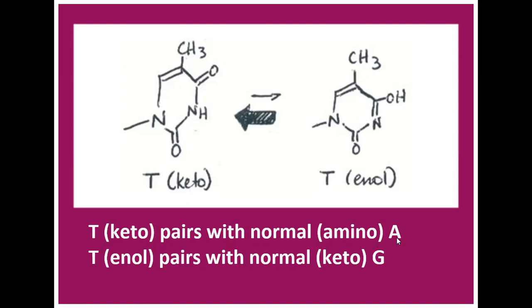And a small fraction of thymine in enol form existed in the cell. So thymine in enol form pairs with normal keto form guanine, which is unusual.